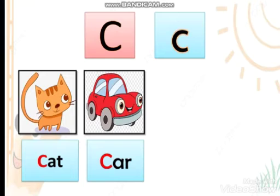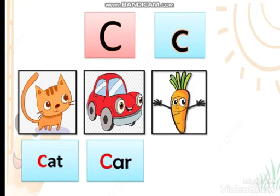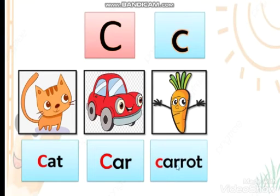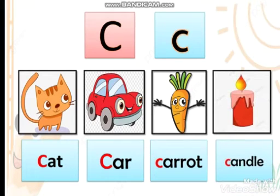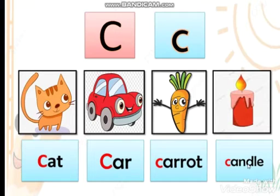What's this? It's a carrot! Carrot — repeat after me please — carrot. And it starts with letter C. So: carrot. Look, what's this? A candle! Candle, candle, candle. One more time — repeat after me. Candle, cat — C words: candle.